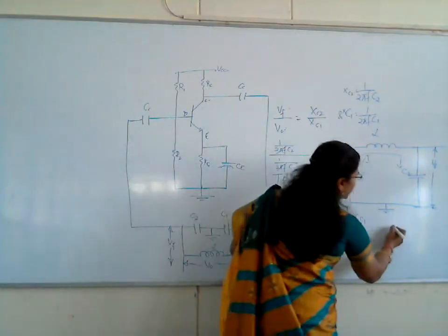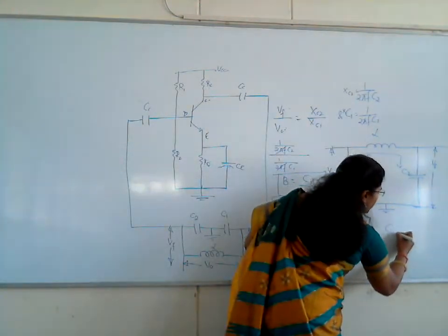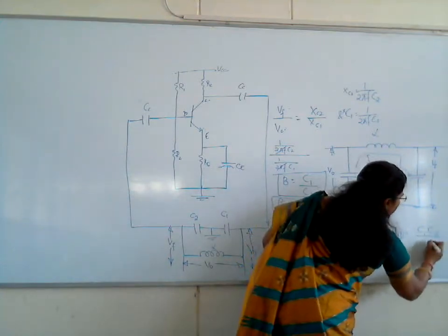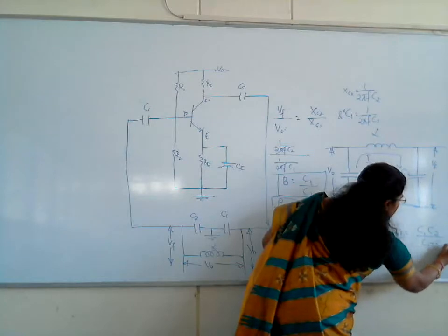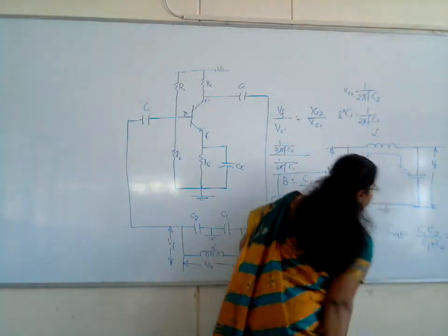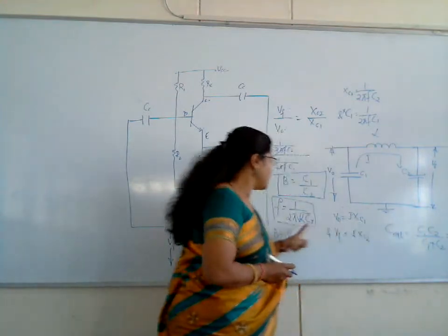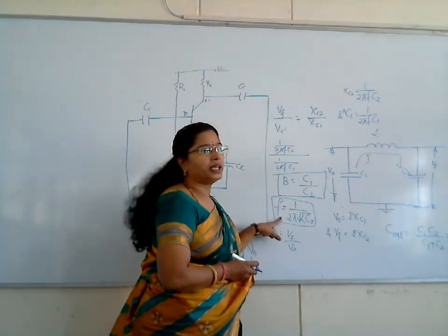the equivalent series capacitor is C1C2 by C1 plus C2, that is nothing but Ct. So we have to calculate the value of Ct and then substitute that value in the frequency.